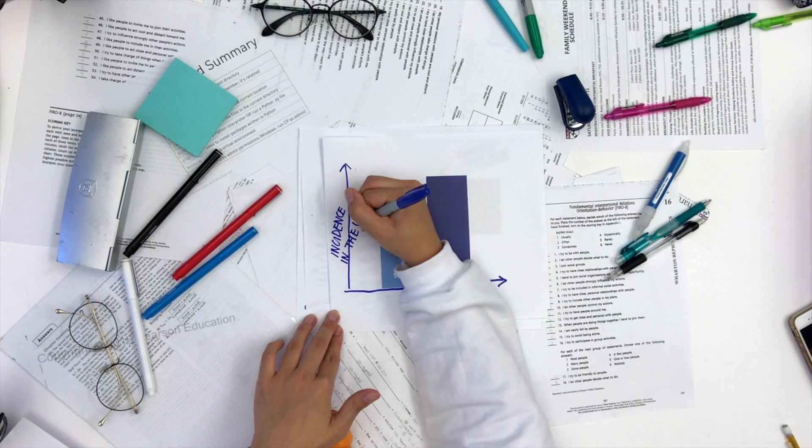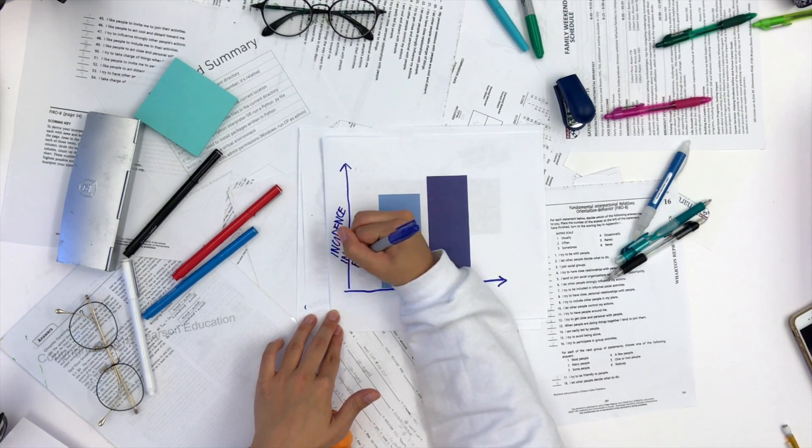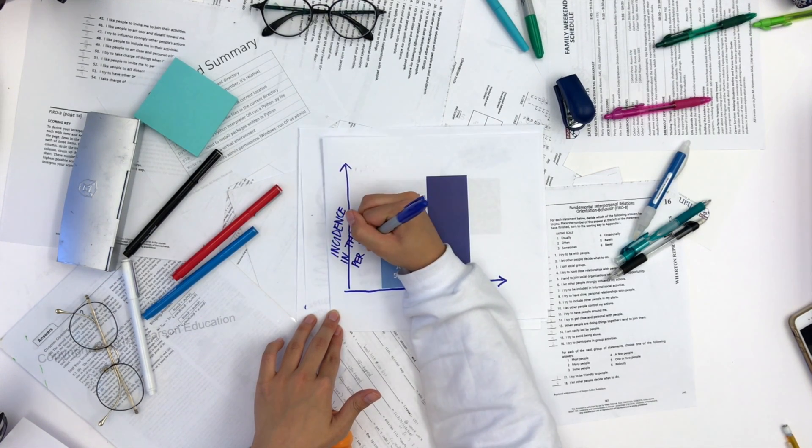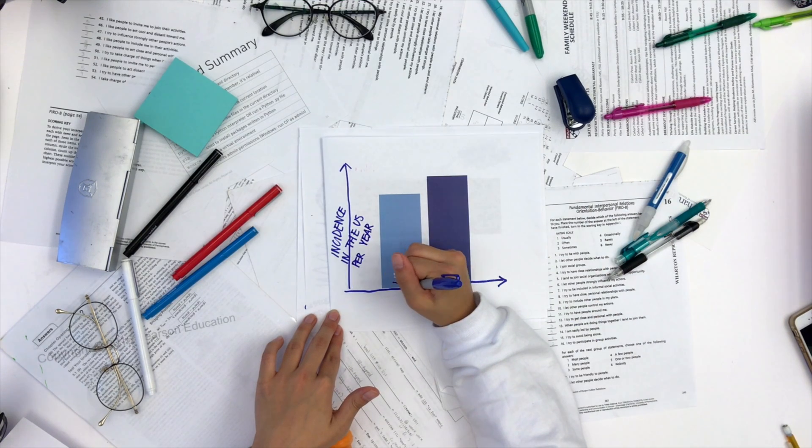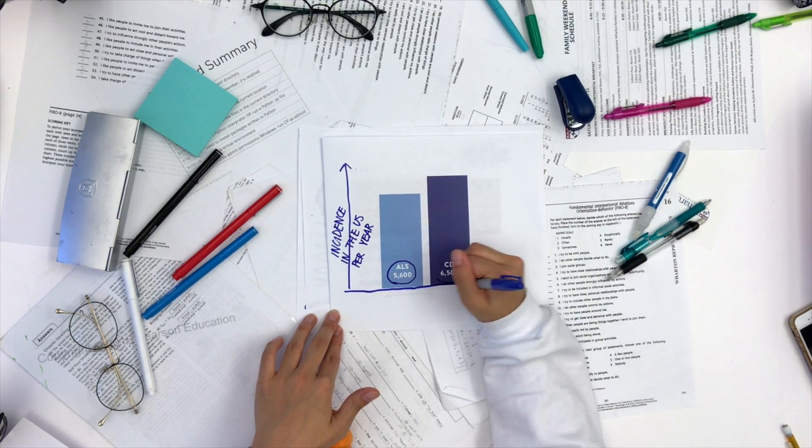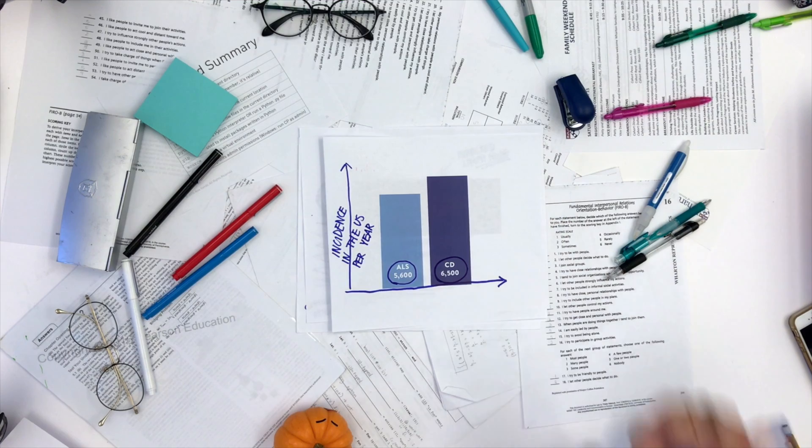Looking at the graph, you would expect the darker bar to be ALS considering the greater amount of publicity surrounding this disease due to the immensely successful Ice Bucket Challenge. However, the grim truth is that more people face Castleman disease, although the public awareness is not even a margin of that of ALS.